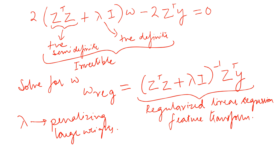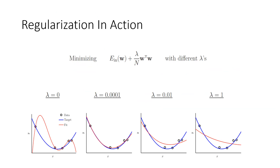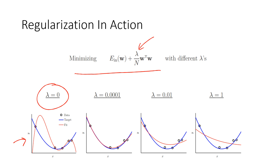Having understood the idea behind regularization and why we penalize weights, let's look at some experiments. Going back to experiments we looked at before: the problem is this unconstrained optimization problem with lambda as input. When lambda is zero, all we're doing is minimizing E_in — fitting a fourth-order polynomial to five noisy data points, which is a complex model, and it went all over the place. Applying a small penalty through lambda gives a huge improvement — it almost fits the data well.